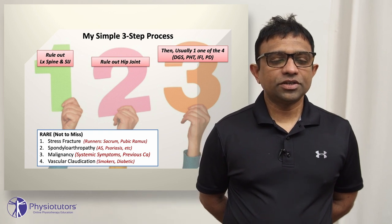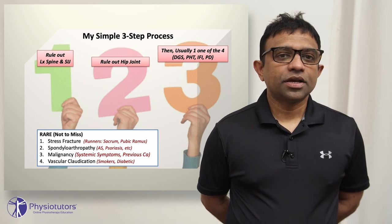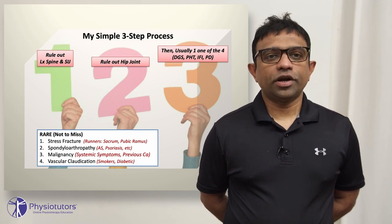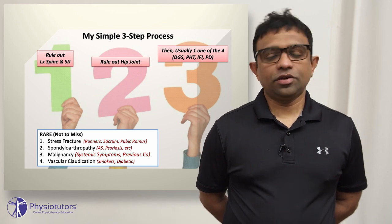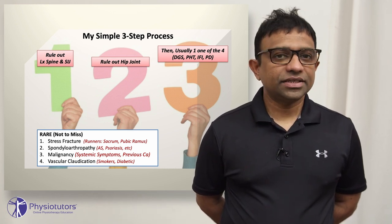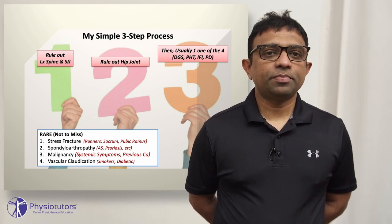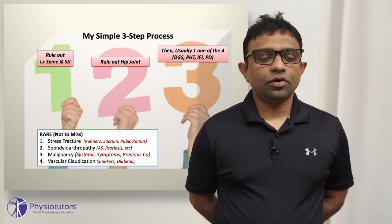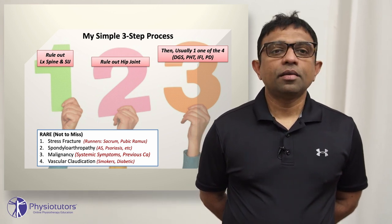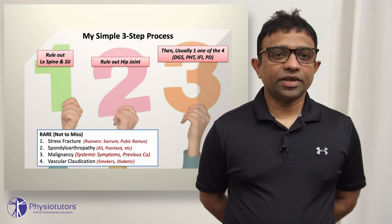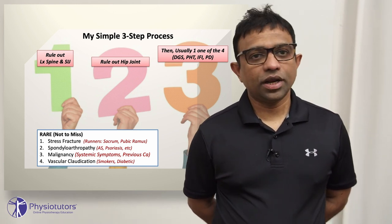The first place to start is always to rule out the lumbar spine and SIJ. The most common cause for chronic gluteal pain is referred pain from the lumbar spine — it could be disc pathology, facet joint pathology, or any structure with a referral pattern from the lumbar spine that can cause buttock pain. Also be mindful of the SIJ; people with hypermobility, ankylosing spondylitis, or inflammatory pathologies can have SIJ pain referring into the buttocks as well.